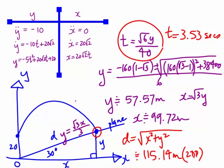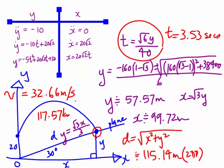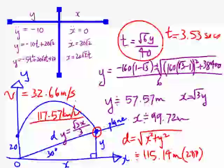Dividing distance by time: 115.14 / 3.53 ≈ 32.66 meters per second required speed. That converts to about 117.57 kilometers per hour. The world record for 100 meters is just under 10 seconds, so running 115 meters in 3.53 seconds is not humanly possible. This person is not going to catch the ball. Thank you for watching and we'll continue the series shortly. Bye for now.